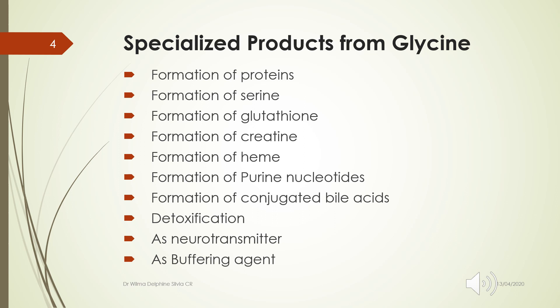Glycine is actively involved in the synthesis of many specialized products: it is a constituent of various body tissue proteins, protein hormones, enzymes, and collagen; it participates in formation of serine; synthesis of glutathione, a scavenger of free radicals; formation of creatine, which in turn synthesizes creatinine; formation of heme (the first step of heme synthesis requires glycine); formation of purine nucleotides; synthesis of conjugated bile acids; and detoxification — where conjugation of benzoic acid with glycine converts benzoic acid to hippuric acid.